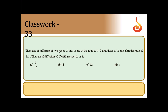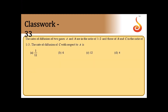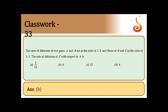Question 33: Rates of diffusion of gases A and B are in ratio 1:2, and B to C are in ratio 1:3. Find ratio of C to A. Multiplying B:C by 2 gives 2:6, making A:B:C = 1:2:6. Therefore C:A = 6:1. Answer is option B.